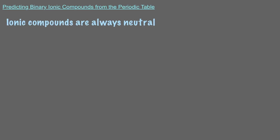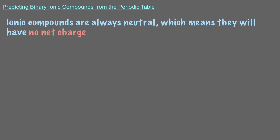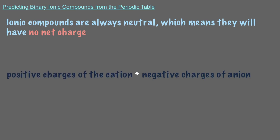Now that we know how to predict different ions, let's move on to seeing how they make ionic compounds. As we saw in a previous video, ionic compounds are always neutral, which means they'll have no net charge. That means that the sum of the positive charges of the cation and negative charges of the anion must be equal to 0.